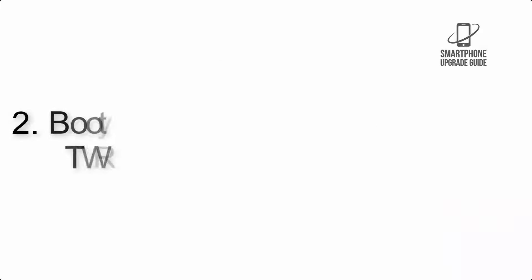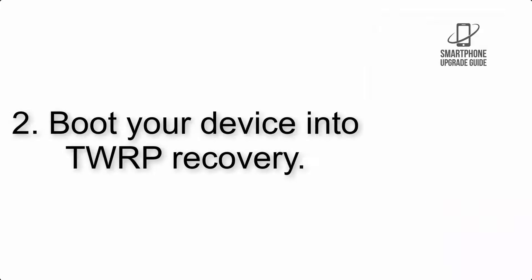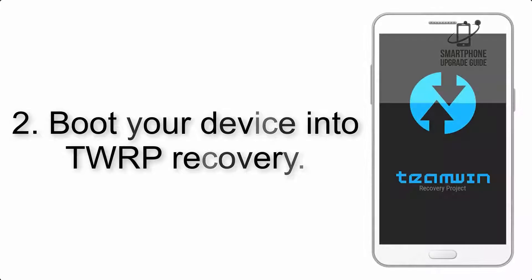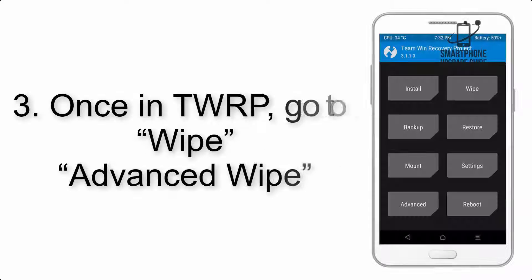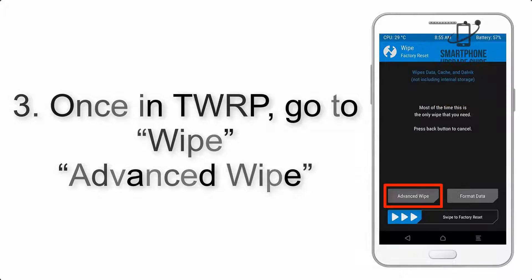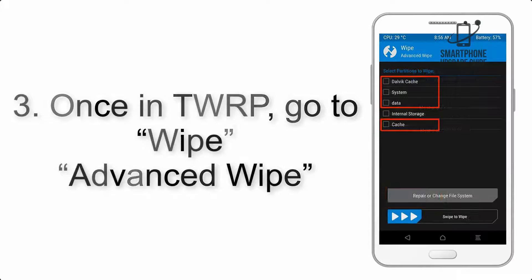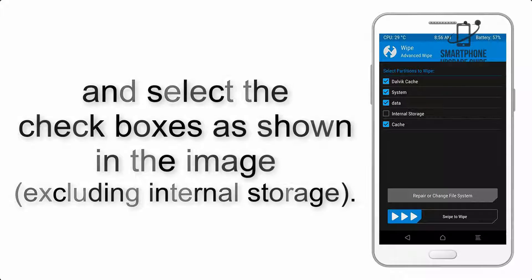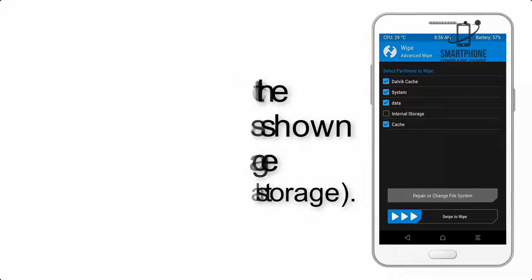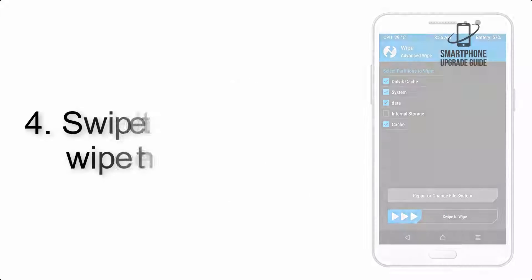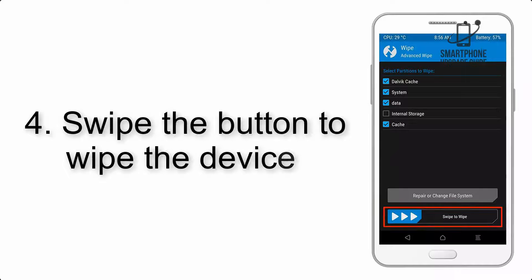Step 2: Boot your device into TWRP recovery. Once in TWRP, click on Wipe, then Advanced Wipe, and select the checkboxes as shown in the image, excluding internal storage.